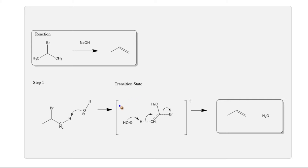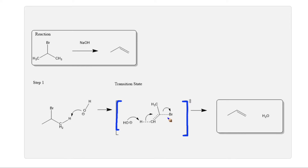This mechanism is said to be concerted, and the transition state is shown here in brackets. A transition state happens so fast that it is not able to be captured in an experiment, and thus is a hypothetical representation of an intermediate to explain the reaction.